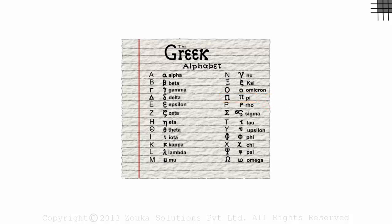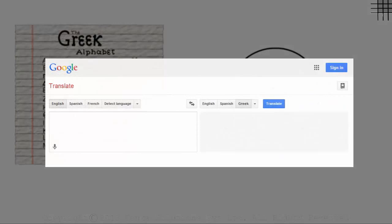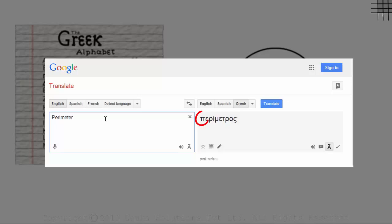We just saw that pi has got something to do with the parameter or the circumference of the circle. Let's use Google Translate to see the Greek equivalent of parameter. As we can see, the first letter of the Greek word is pi.